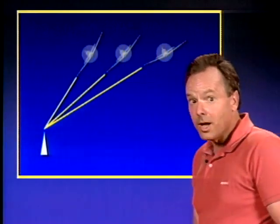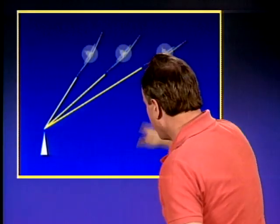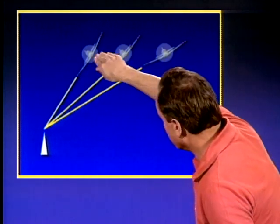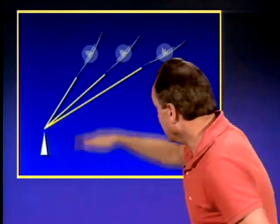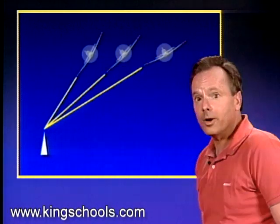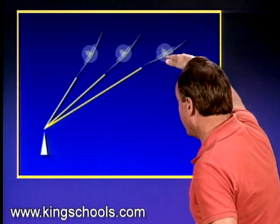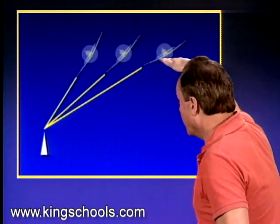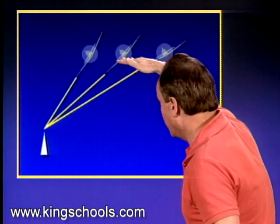The pivotal altitude does not vary with your bank angle. Notice all of these airplanes are on different bank angles, but they would have the same pivotal altitude. Your pivotal altitude varies with the square of your ground speed. It's the ground speed that determines your pivotal altitude, and little tiny changes in your ground speed would make a big difference in your pivotal altitude, so the wind really does affect your pivotal altitude.